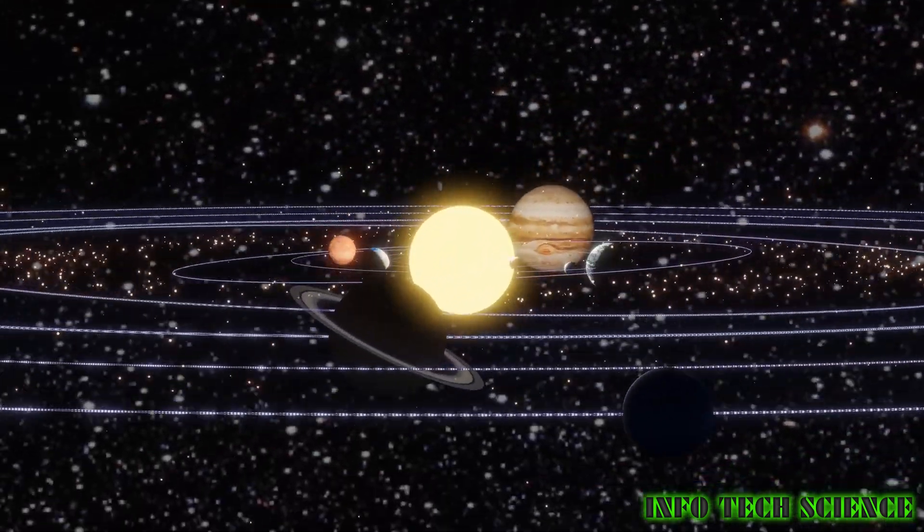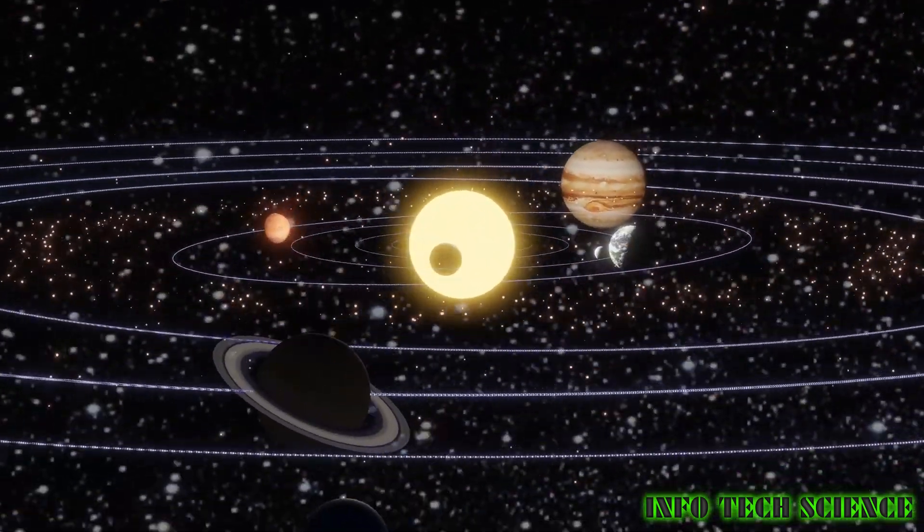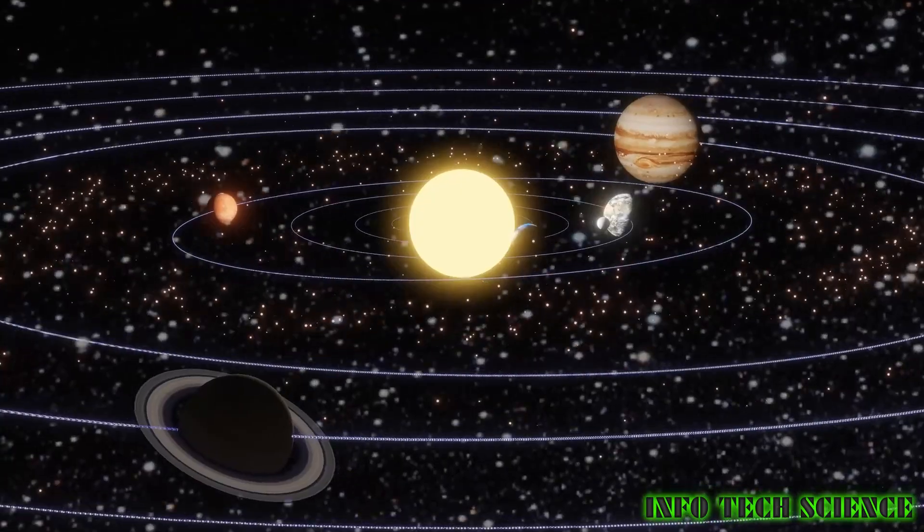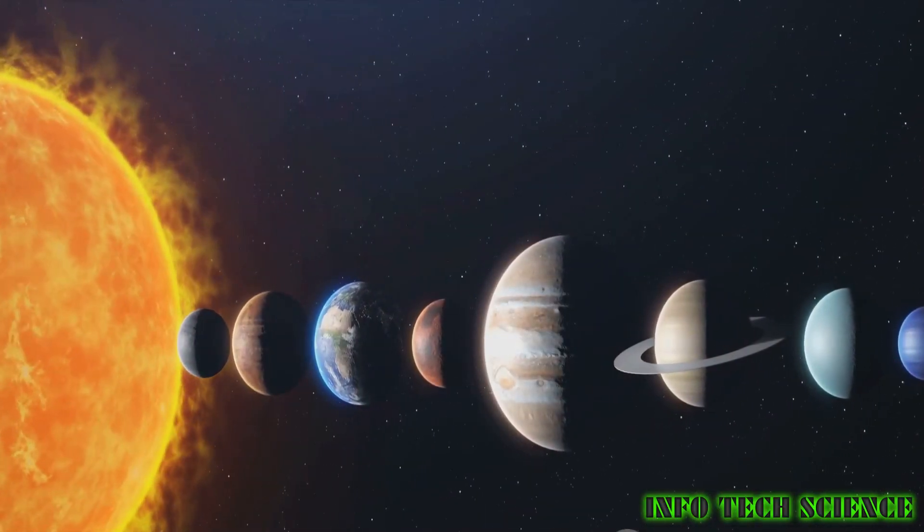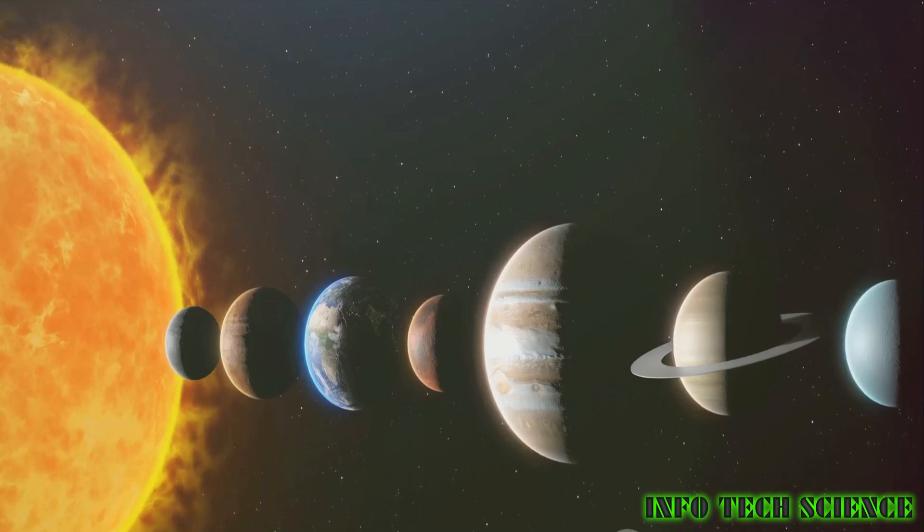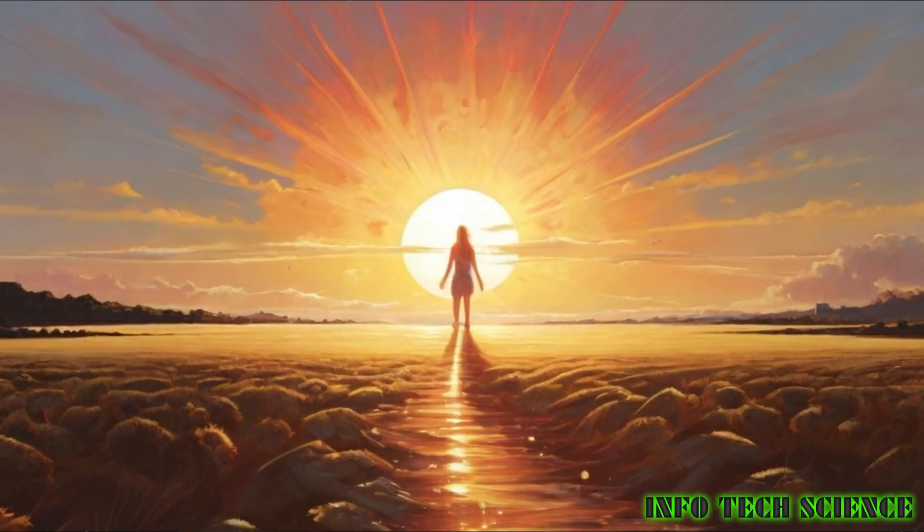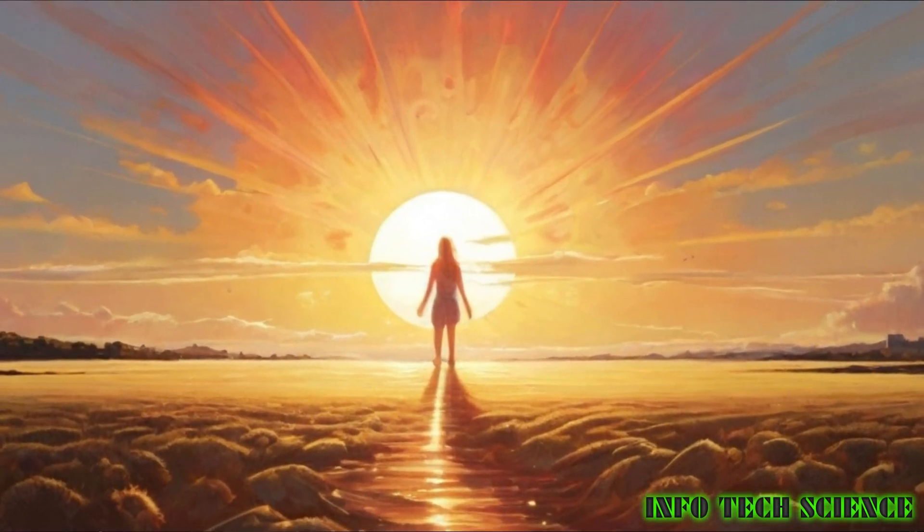Dear viewers, have you ever seen the images of our solar system floating around the internet? The Sun, seemingly just a tad larger than Jupiter. But let's shatter that illusion. Our Sun is so colossal that it could swallow about 1,000 Jupiters. Yet, in the grand cosmic scale, our Sun is a speck.